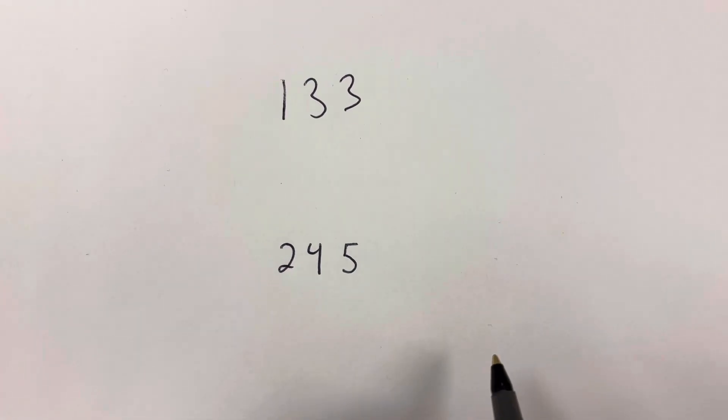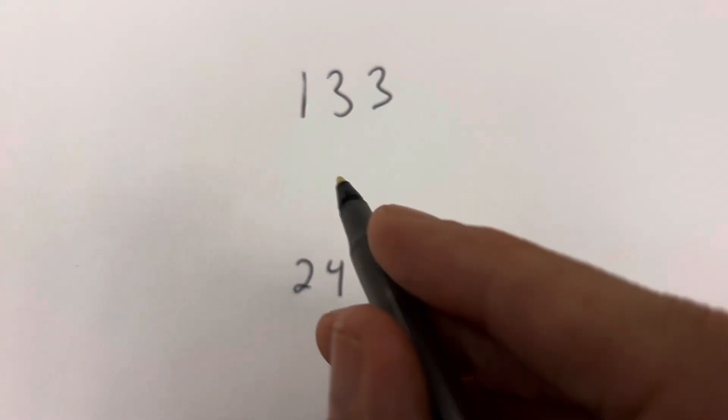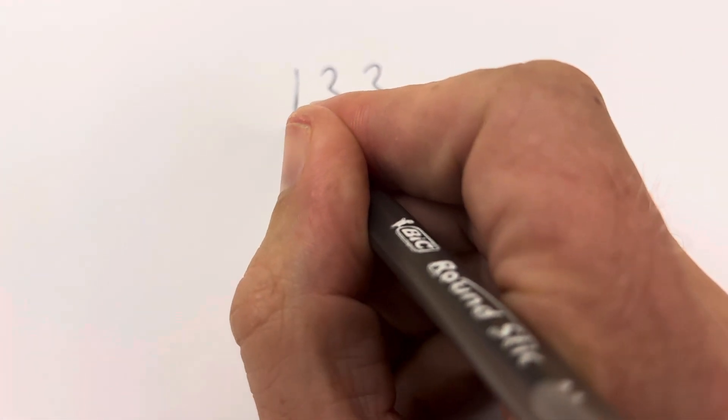Check out this cool division rule to see if a number is divisible by 7. 7 is the one we're typically told there is no rule for, but there is a rule you just never learn.